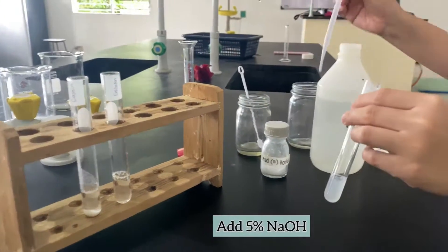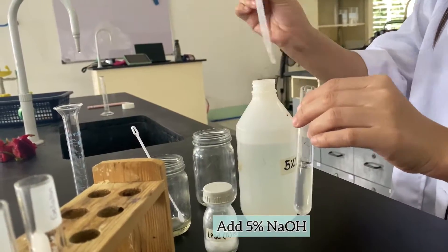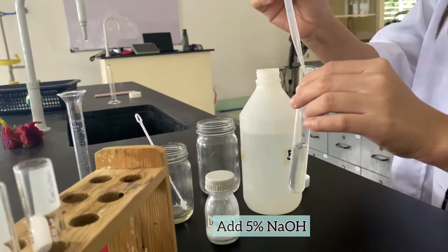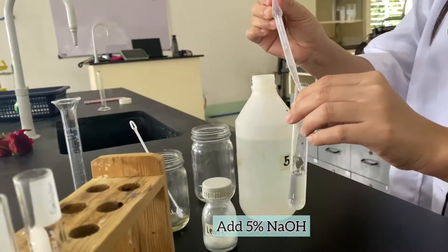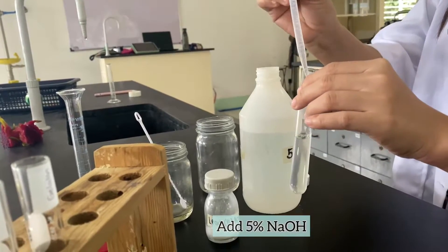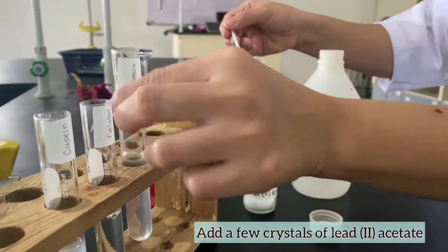For this test, about 5 ml of 5% sodium hydroxide solution was added to each protein suspension. And then a few crystals of lead-2 acetate was also added. It was then heated in boiling water for 5 to 10 minutes with occasional mixing.